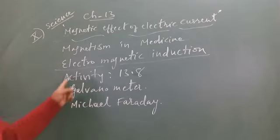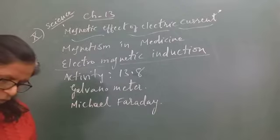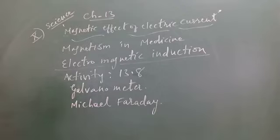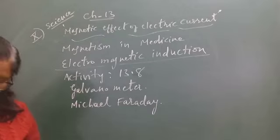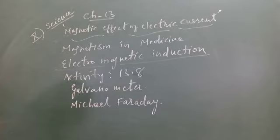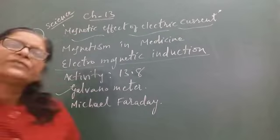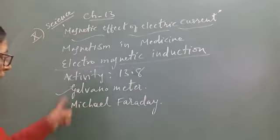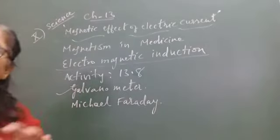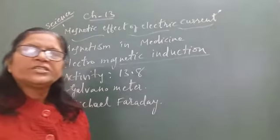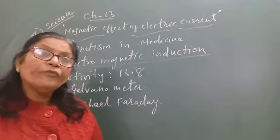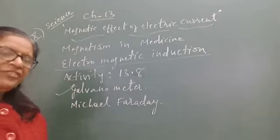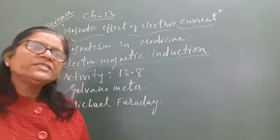We observe this by activity 13.8 on page number 233. First of all, take a coil of wire AB having large number of turns. Connect the ends of the coil to the galvanometer. Galvanometer is one of the instruments to show the presence of current, whether electric current is flowing through the circuit or not. If the deflection is seen, means electric current is flowing through.